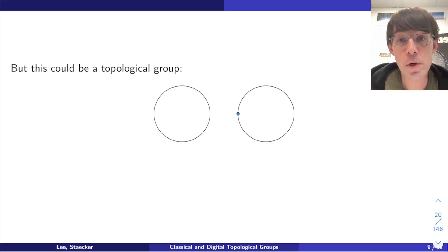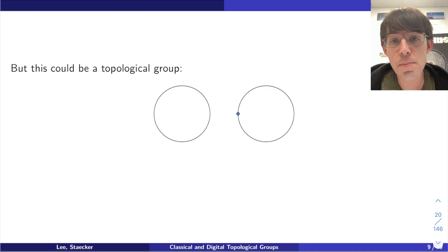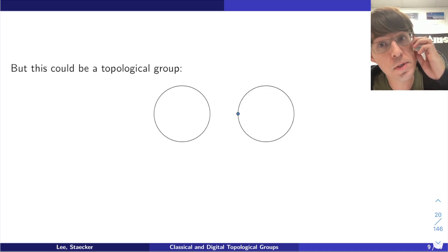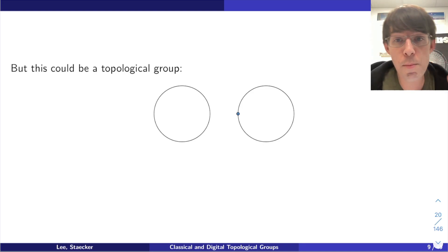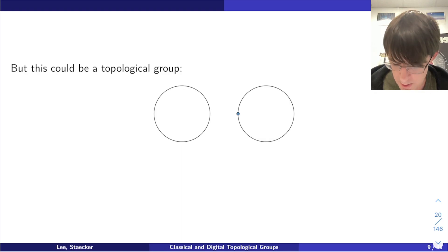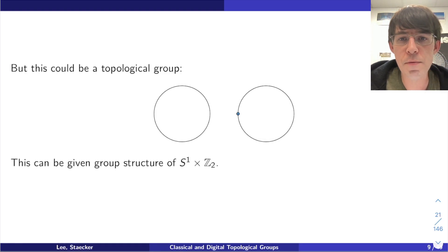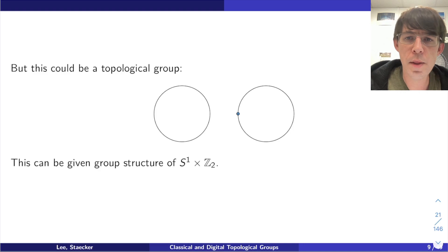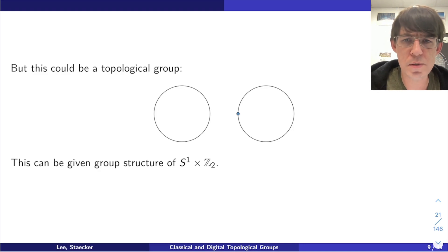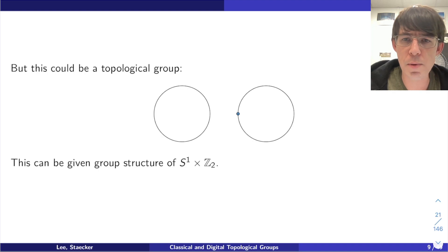For example, the circle is a topological group, but this cross-shaped figure cannot be a topological group because it's not a homogeneous space — the point in the middle has four paths coming out of it, while all other points have only two. So that's not homogeneous and therefore cannot be a topological group. But a shape with two separate circle components could be a topological group — the two components are homeomorphic to one another, and you can give it a group structure of S^1 cross Z2.